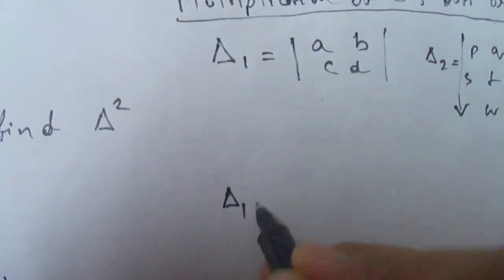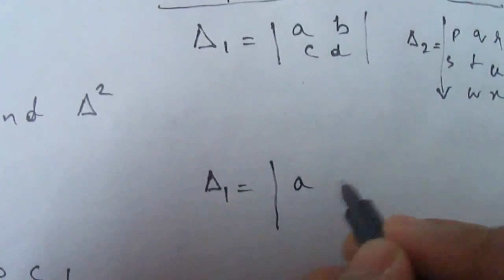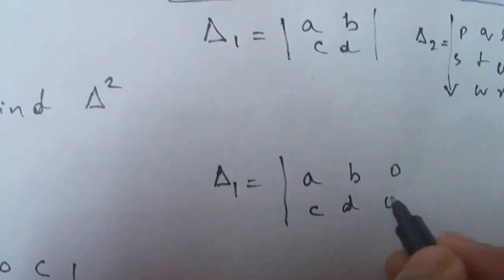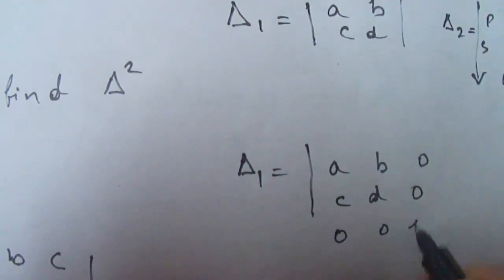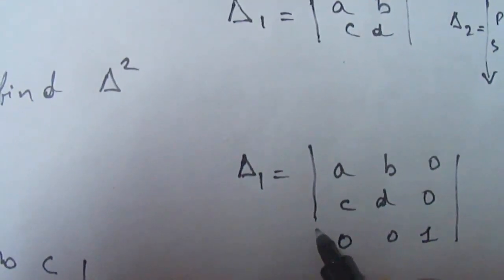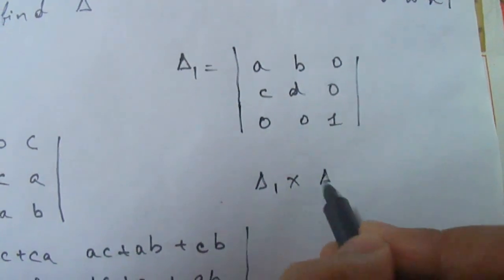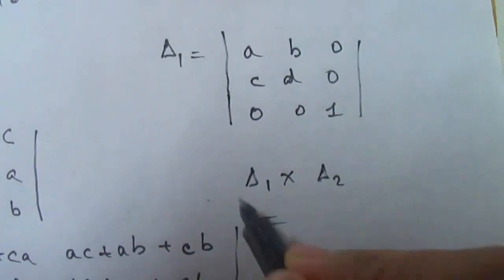So we have to convert del 1 into a 3×3 matrix: a, b, 0, c, d, 0, and this will be 0, 0, 1. Now we can easily multiply del 1 and del 2 by row and column method and we will get the answer.